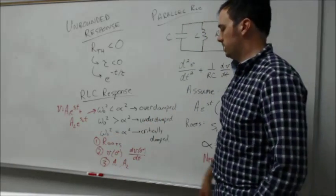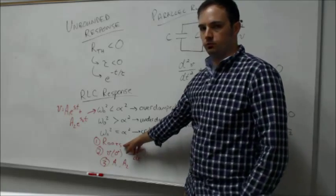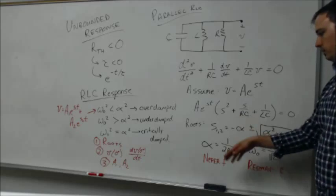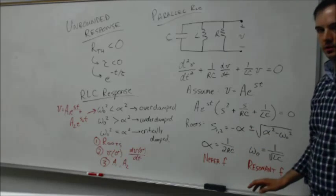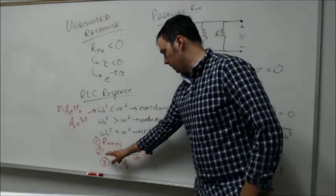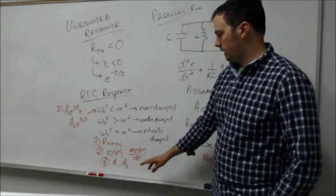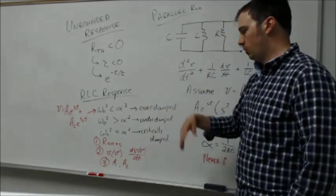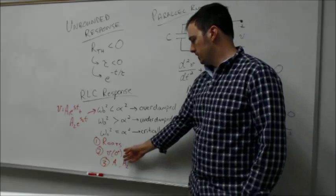These roots are simply going to be determined by whatever elements are sitting in your circuit, whatever those values are. So you can do that initially. The second one is evaluate what's happening at the circuit at time t equals zero plus, so immediately after you've opened or closed some switch.